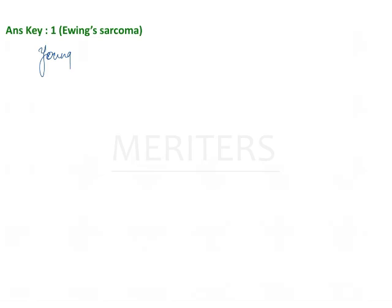A few important points about Ewing sarcoma: it is usually seen in the younger age group, 5 to 25 years of age. It is more common in males as compared to females, and more common in blacks.